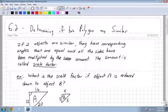Alright, section 6.2. This is building on the last example of the last section, determining if two polygons are similar. So if two objects are similar, they have corresponding angles that are equal, and all the sides have been multiplied by the same amount. The amount is called the scale factor.